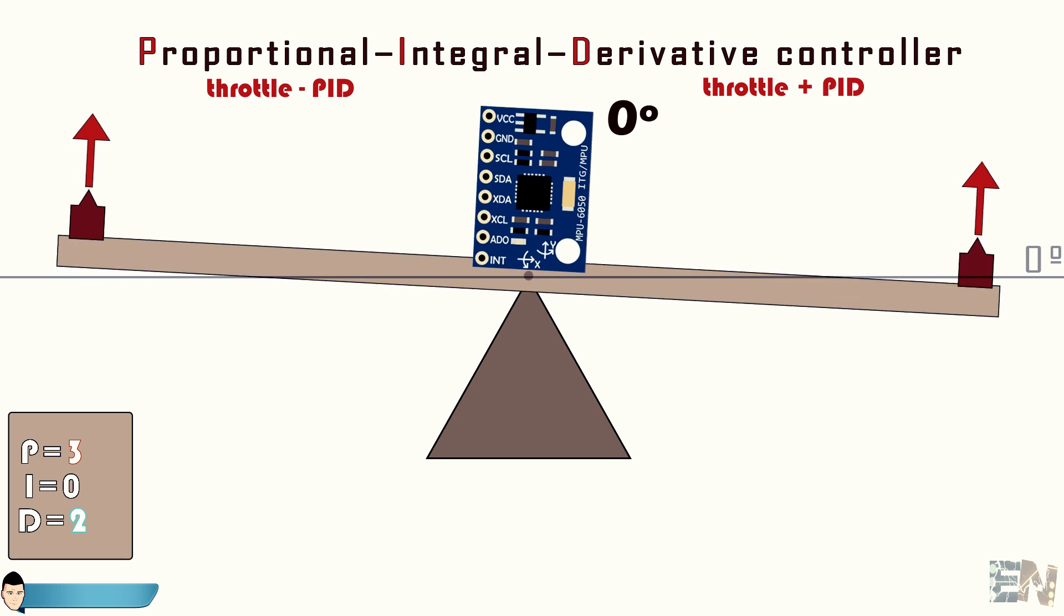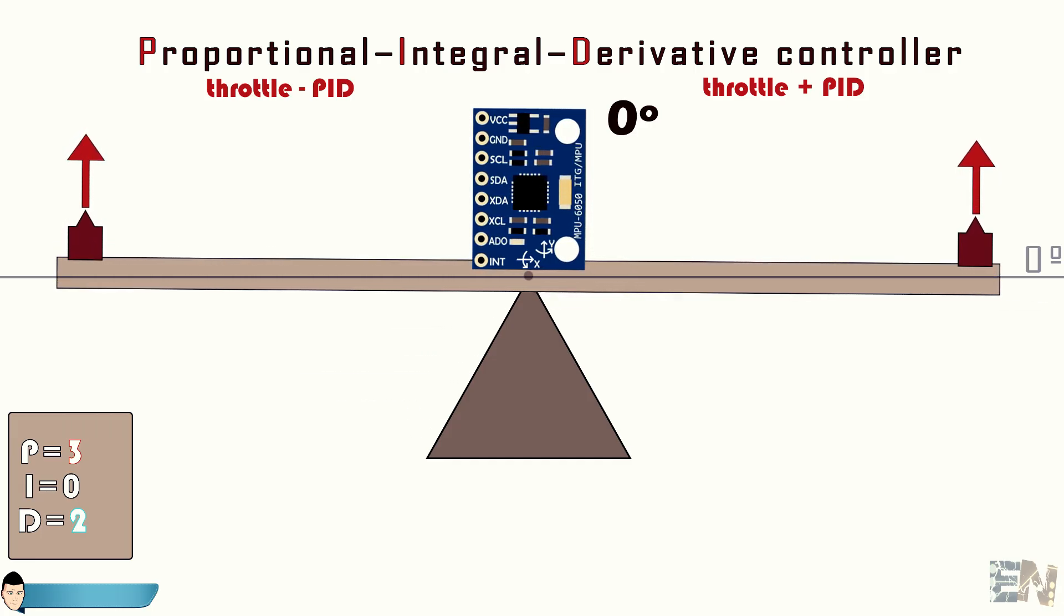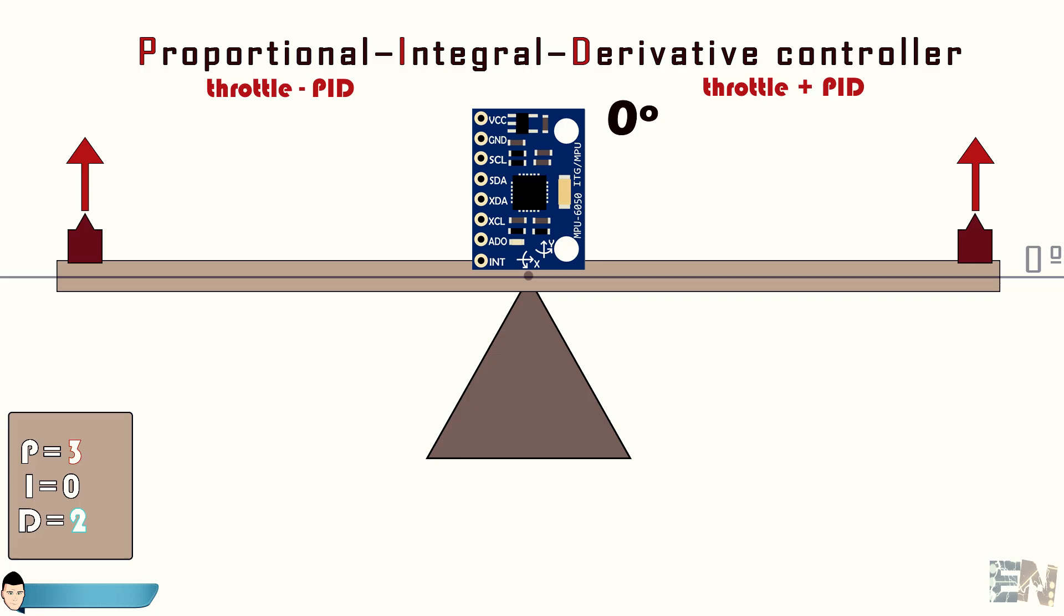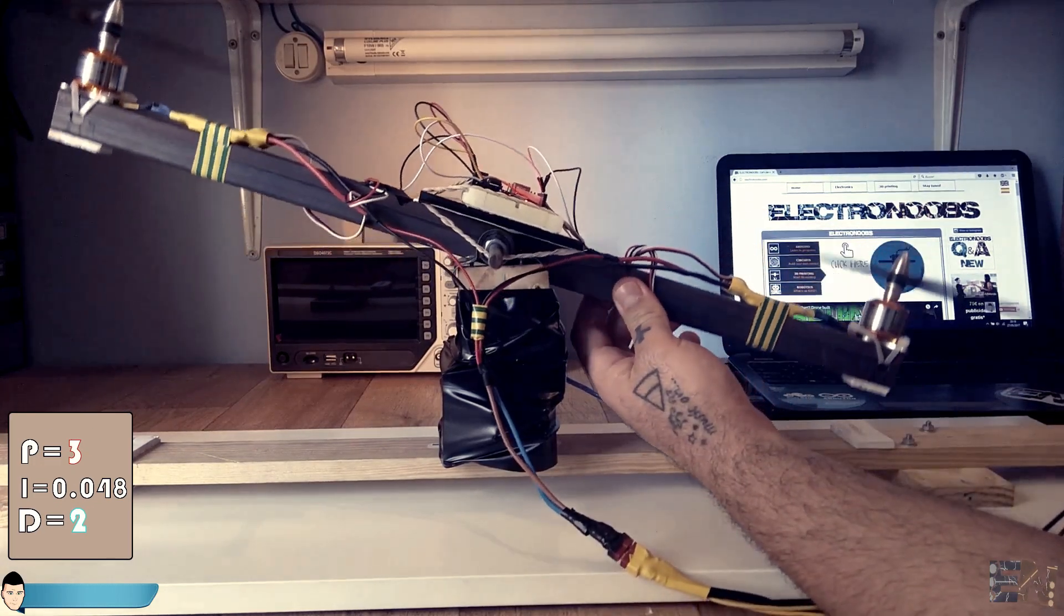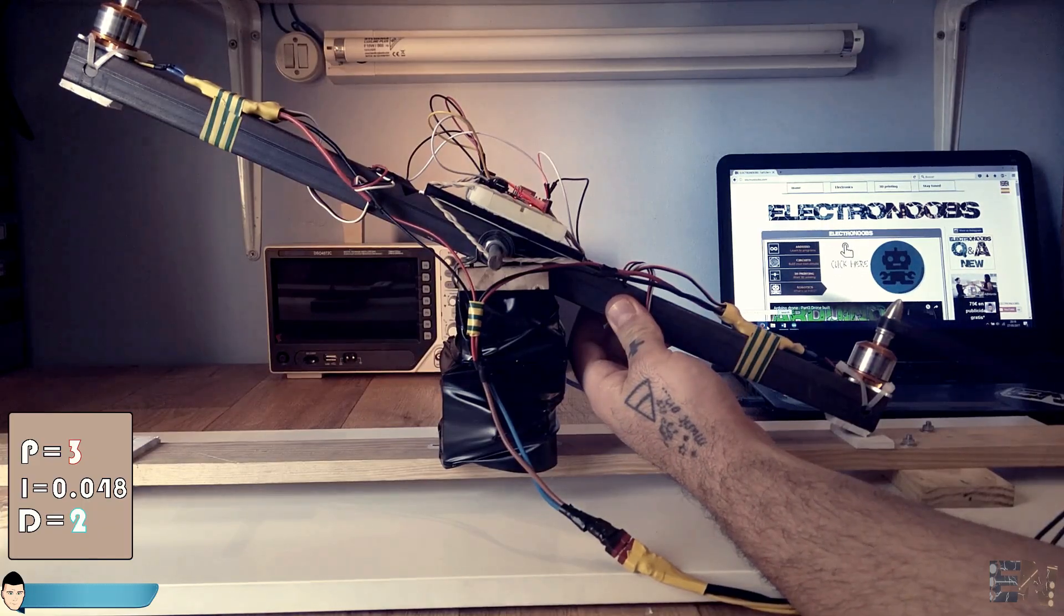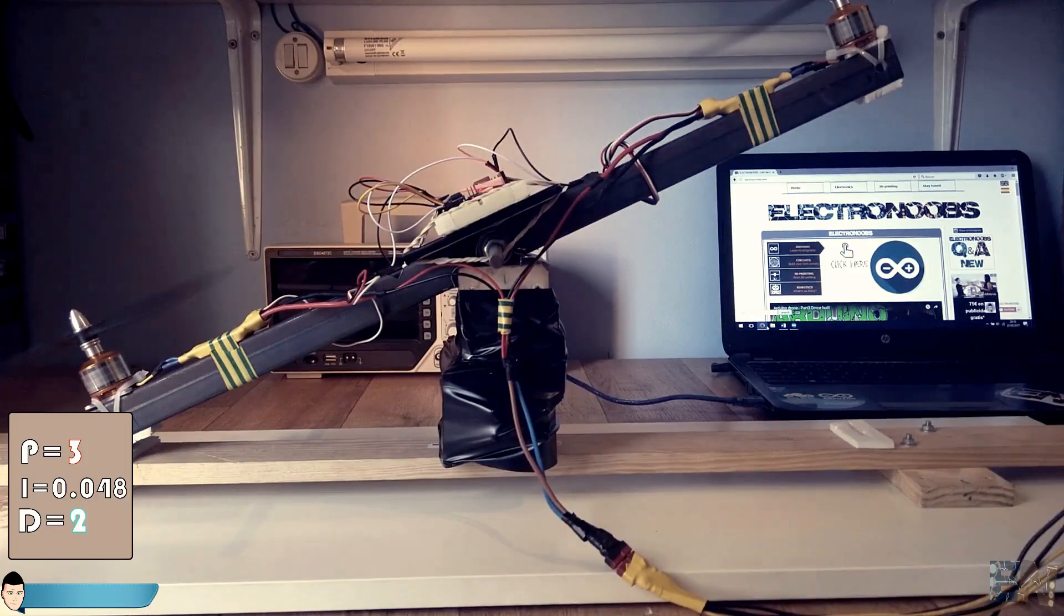For that we add the integral constant that gets bigger and bigger as more time is elapsed. To show you how this works I will keep the bar lean to the right and observe that each time the right motor spins faster and the left one slower. That's because each loop the integral value increases a little bit more.